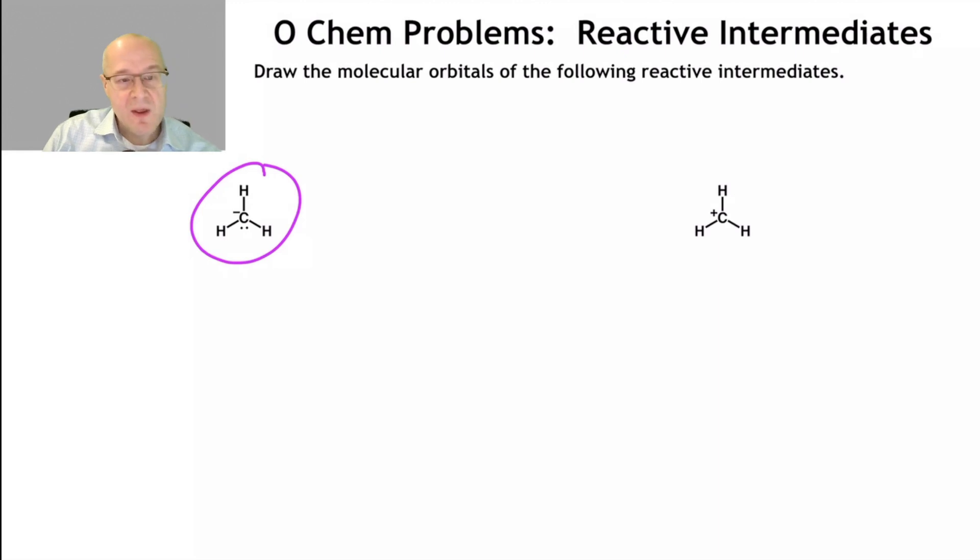So we're going to do this one first. Now this is a carbon with four electron groups, so it's sp3 tetrahedral. Let me count them for you: one bond, two bonds, three bonds, and the lone pair makes the fourth electron group.